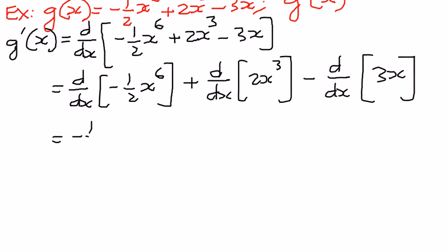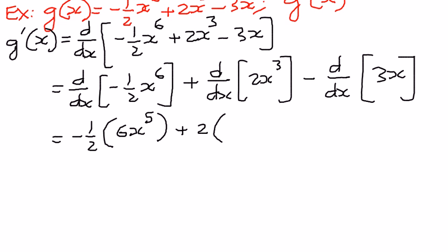Negative one half is a constant, so we pull it out. d by dx of x to the power of 6 is in the power rule format with n equal to 6, giving 6x to the power of 5. Plus 2 is a constant, and d by dx of x to the power of 3 with n equal to 3 gives 3x to the power of 2. Minus d by dx of 3x — 3 is a constant, and d by dx of x equals 1.